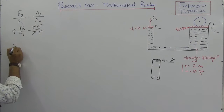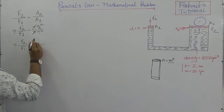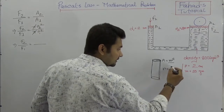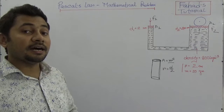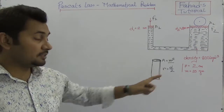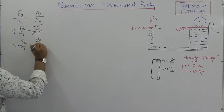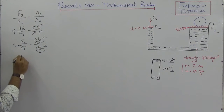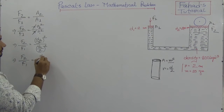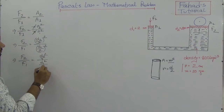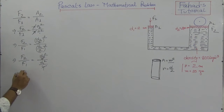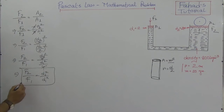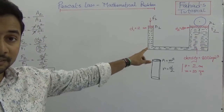From both sides we can eliminate π, so F2/F1 = r2²/r1². Now, radius r is diameter over 2, so we can write: F2/F1 = (d2/2)² divided by (d1/2)², which gives F2/F1 = (d2²/4) divided by (d1²/4). We can also eliminate 4 from both sides, so F2/F1 = d2²/d1². This is the working equation when diameter is given instead of area.